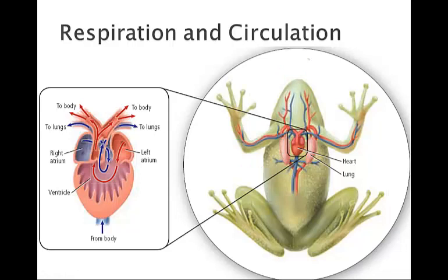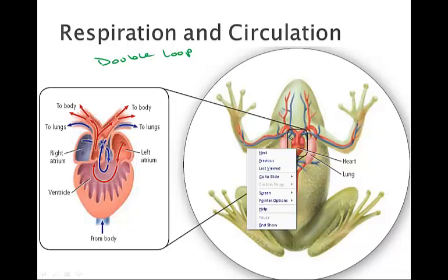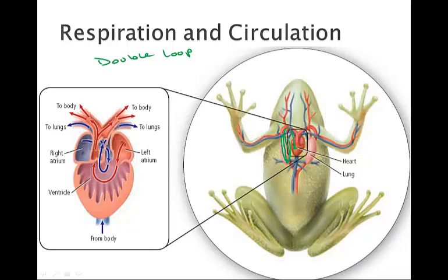The circulatory system in amphibians is a double loop. The first loop is coming from the heart, deoxygenated blood. Oxygen without blood leaves the heart. Blood without oxygen leaves the heart and travels to the lungs where it gets oxygen and then comes back into the heart.